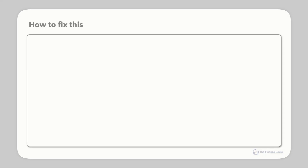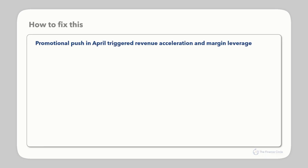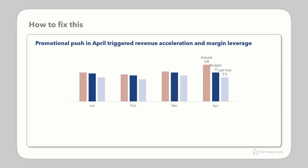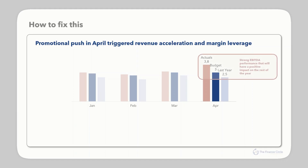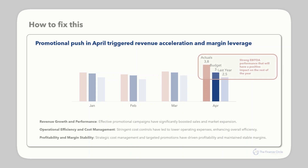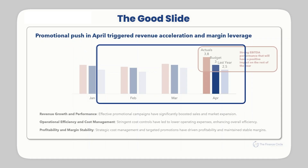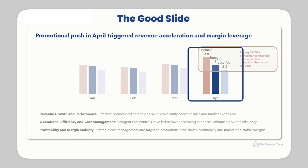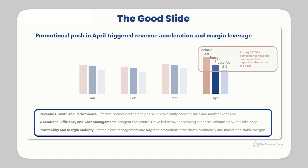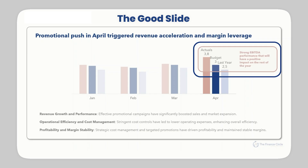Now let's see the transformation process. First, identify the real message hidden in all that data — that's your headline. Then select the right visualization to tell this story. Once selected, declutter and focus on the right data points. Highlight what truly matters, and finally add just enough supporting text. That gives us a good slide: a strong headline, a clean chart, a visual hierarchy that naturally directs attention, supporting bullet points that provide necessary context, a clear takeaway pointing toward action, and enough white space to create visual balance and clarity.